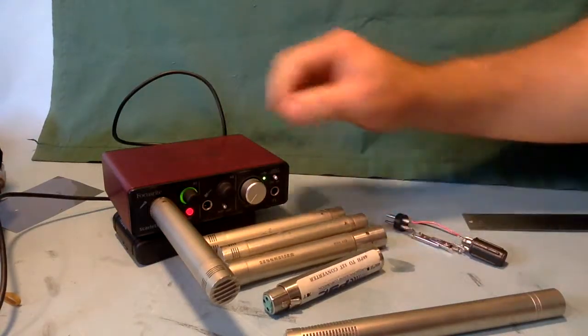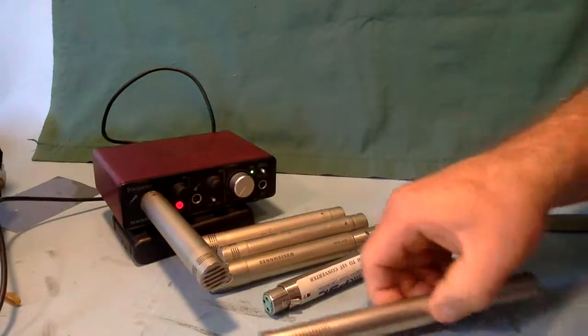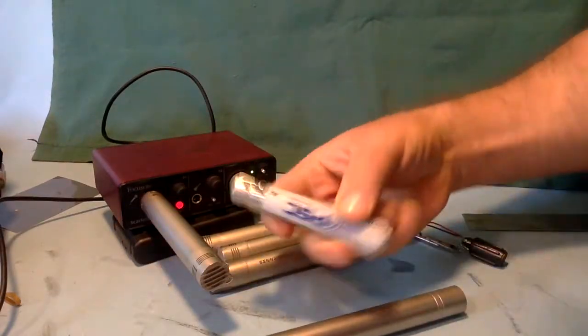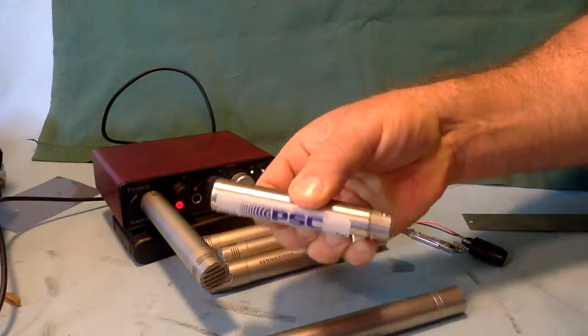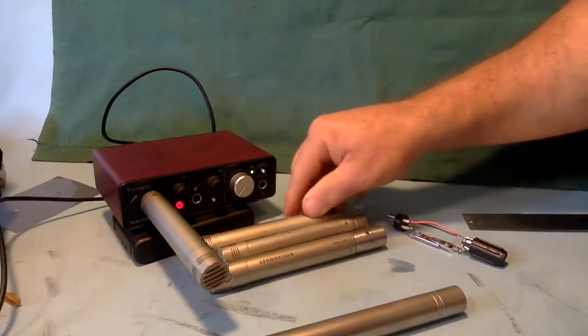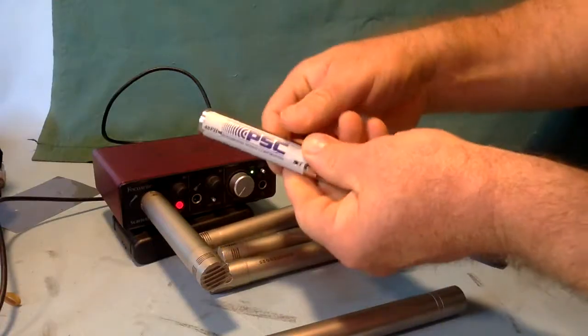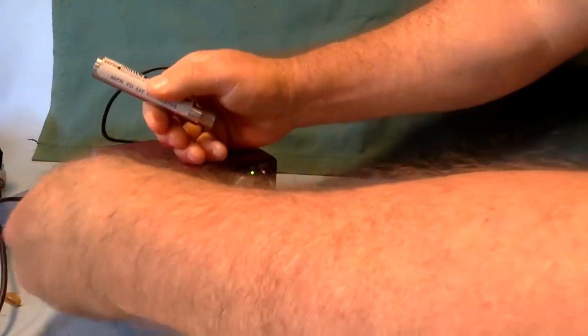Now, if we want to use a T-powered microphone like the 435, we'll have to use a converter, a T-powered converter. So I'm going to unplug this and plug in one of my many T-powered microphones that do work.